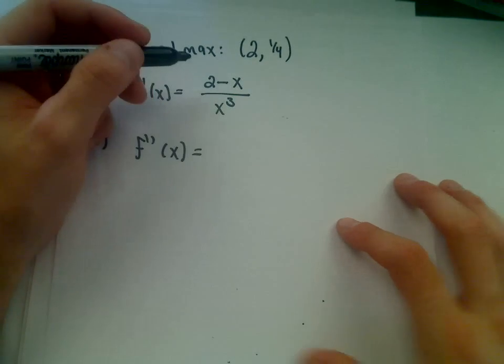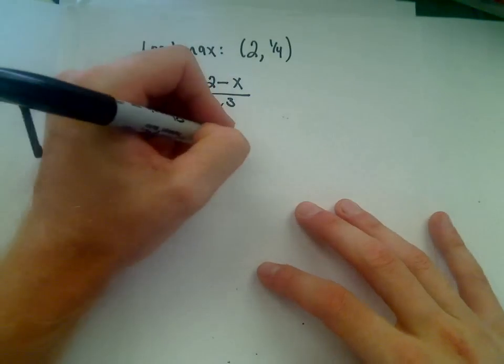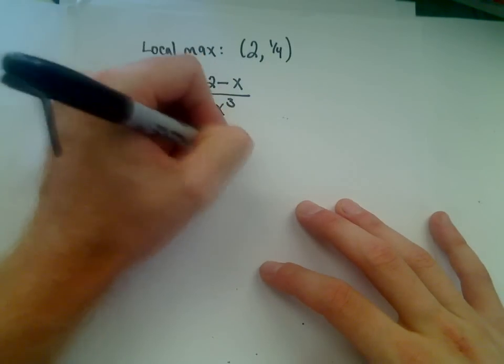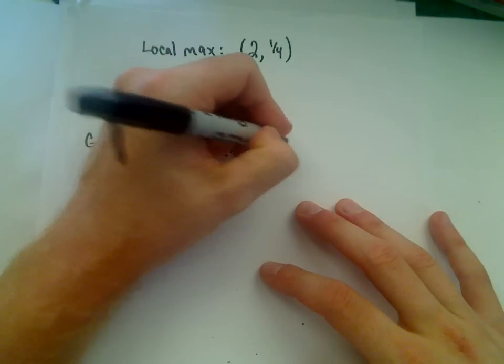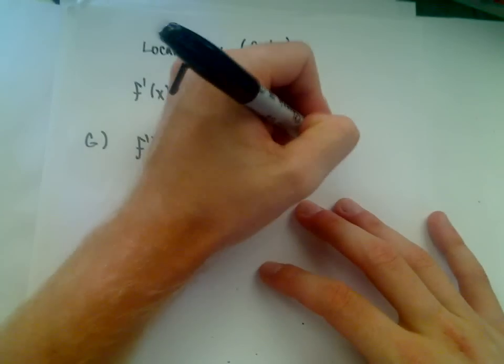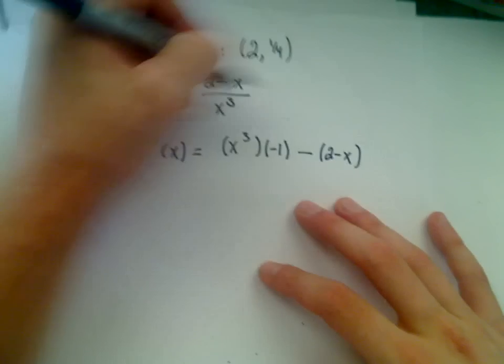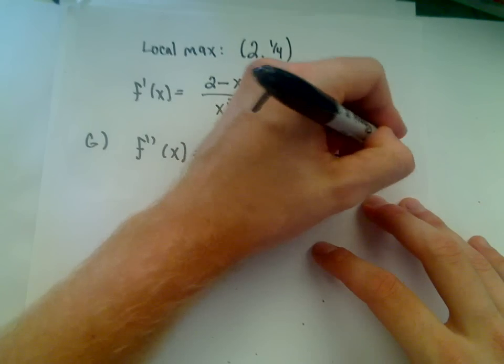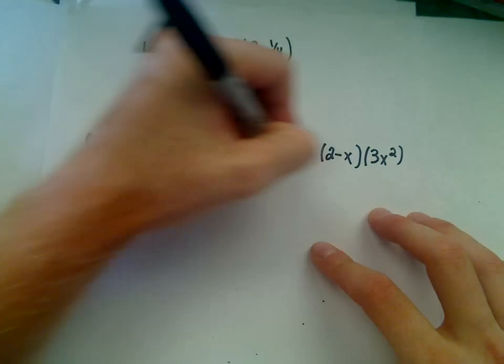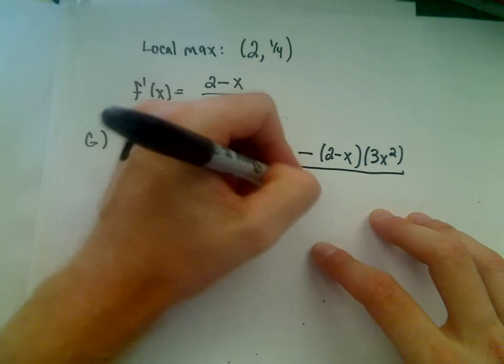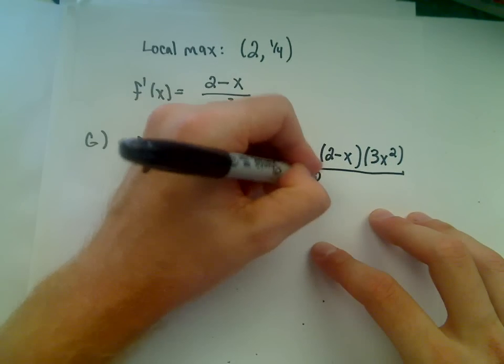So now we have to take the derivative of the first derivative. So again, it says you get the bottom part times the derivative of the top, which will just be negative 1, minus the top part times the derivative of the bottom part, all over the bottom part squared.